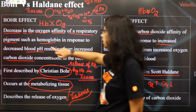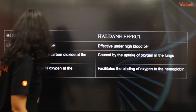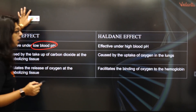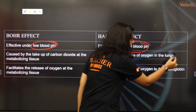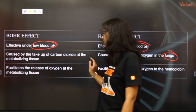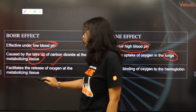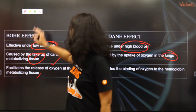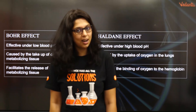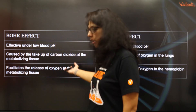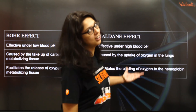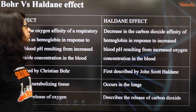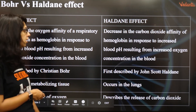Very, very simple. The Bohr effect is effective under low blood pH in the tissues; the Haldane effect under high blood pH in the lungs. The Bohr effect happens in the tissues and facilitates the release of oxygen at the metabolizing tissues. The Haldane effect happens in the lungs and facilitates the binding of oxygen. Bohr effect: tissues, oxygen is left. Haldane effect: lungs, oxygen is grabbed. These two charts will clarify everything for you.